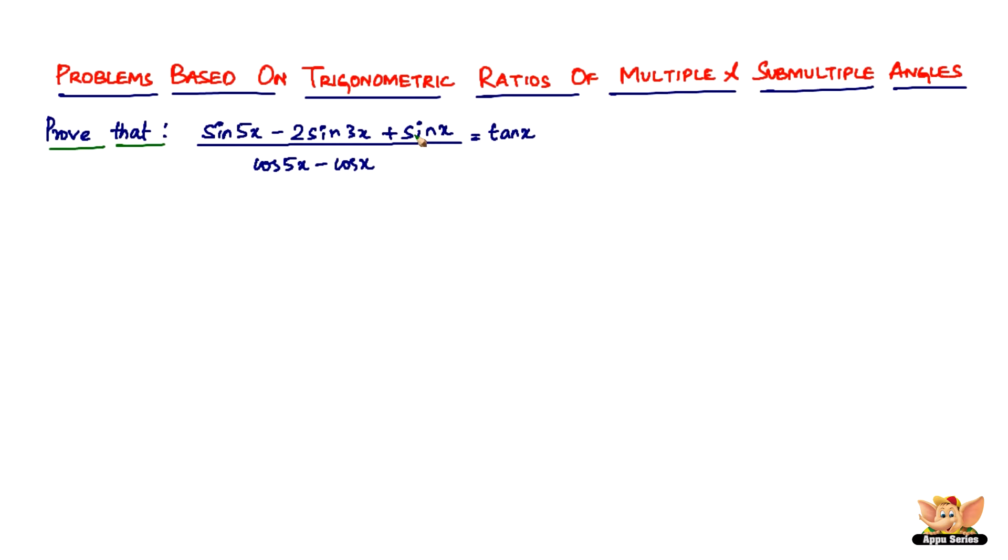Group sine 5x and sine x and you're going to get sine c plus sine d kind. There's a formula that we did, sine c plus sine d. So now what we're going to do is group this. So sine 5x plus sine x minus 2 sine 3x.